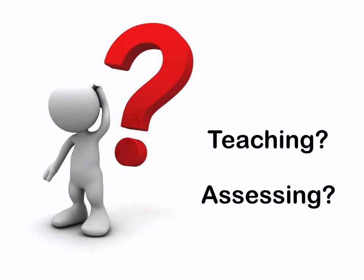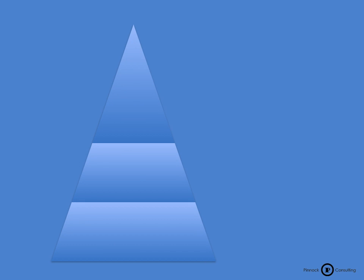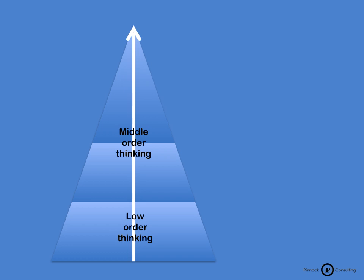There are many predetermined concepts and theories that can be used to determine levels of cognitive ability, and these are all based on the same principle: we start off with low order thinking, build on that to get middle order thinking, and then develop higher order thinking.